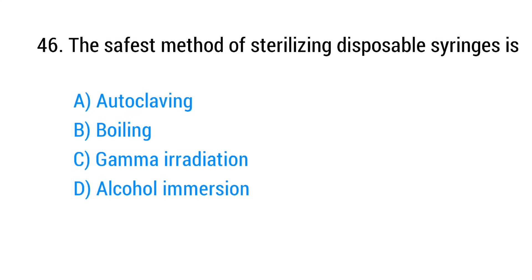Question number 46. The safest method of sterilizing disposable syringes is? The right answer is option C: Gamma irradiation.